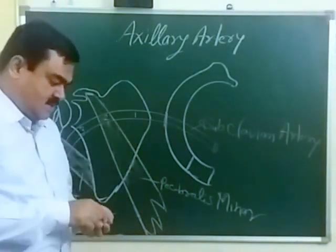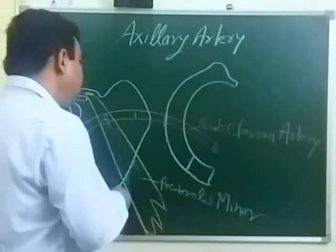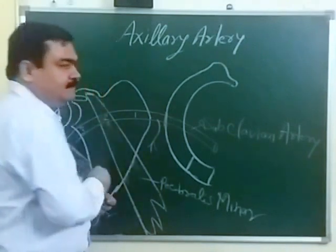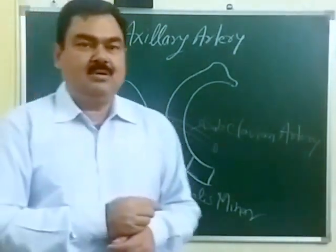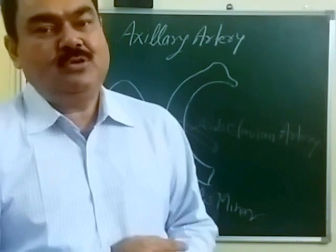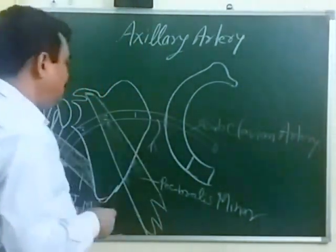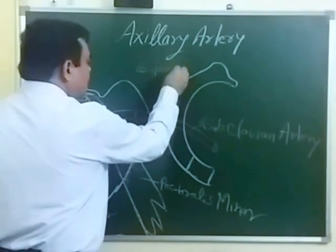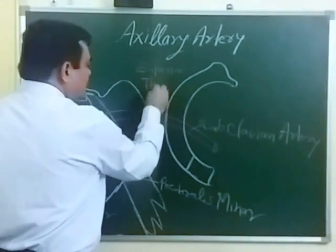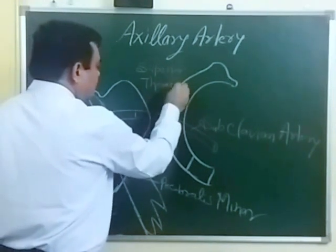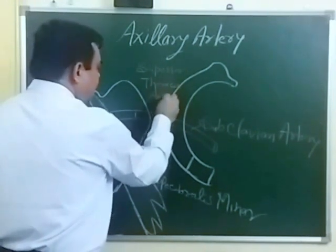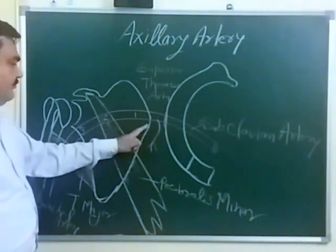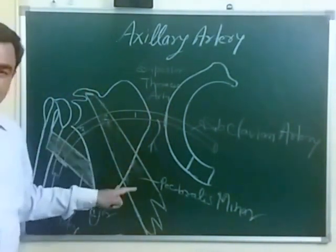The first part gives a single branch: the superior thoracic artery. This superior thoracic artery gives supply to the upper medial part of the thoracic region. So the first part gives only one branch, which is the superior thoracic artery.